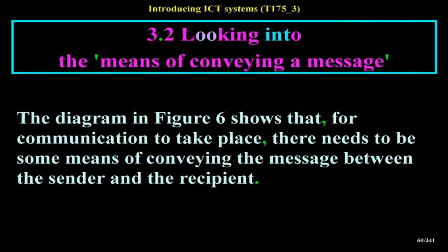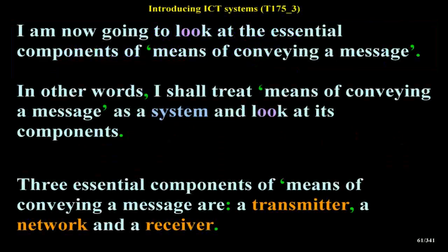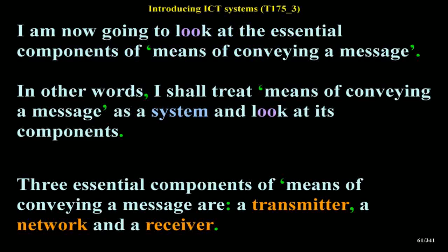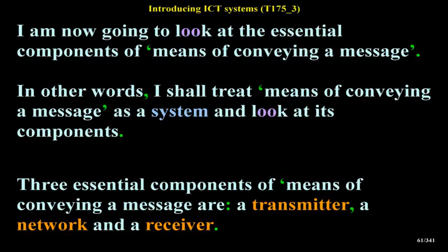Looking into the means of conveying a message: for communication to take place, there needs to be some means of conveying the message between the sender and the recipient. I am now going to look at the essential components of means of conveying a message — I shall treat it as a system and look at its components.